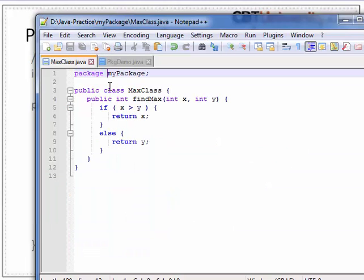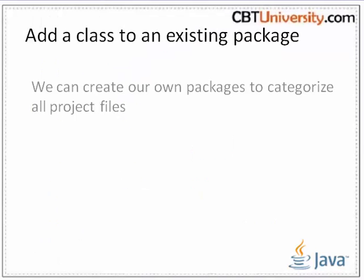We have already discussed that the package name and the folder name must be the same. If they are different, it will not give a compilation error, but the package will not work. To add a class to an existing package, add the package name at the top of the Java source file, save it under the package directory, compile the Java file, and use it like any other class of the package by importing it.